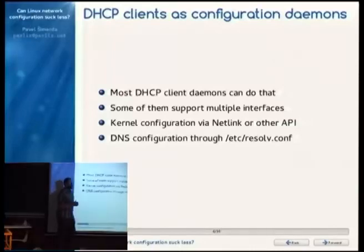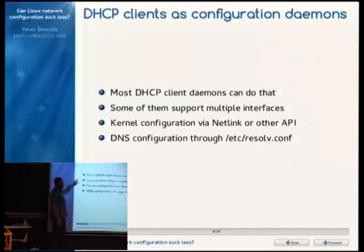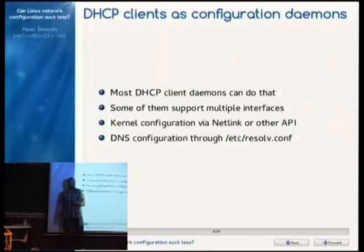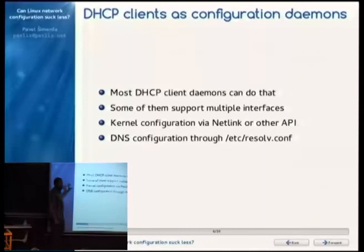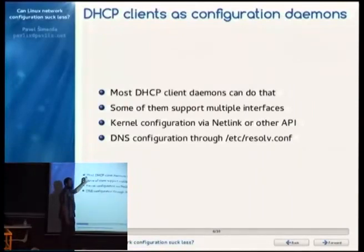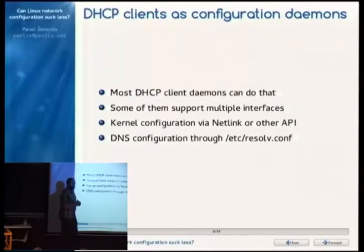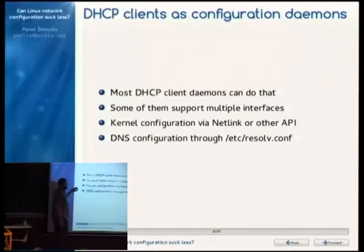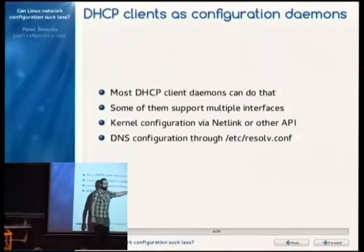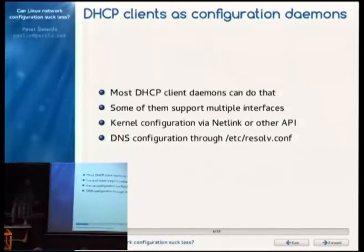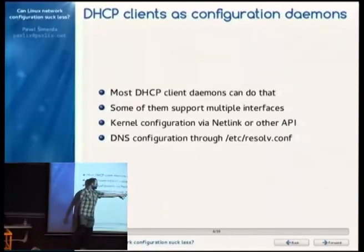Plain DHCP clients — the software usually called DHCP clients — are used as configuration daemons. They're not only doing queries over the network but also configuring things and calling auxiliary scripts. This can work fine for IPv4 with a single interface, or with special configuration using tools like resolvconf or netconfig. The simplest approach for DNS remains via /etc/resolv.conf.